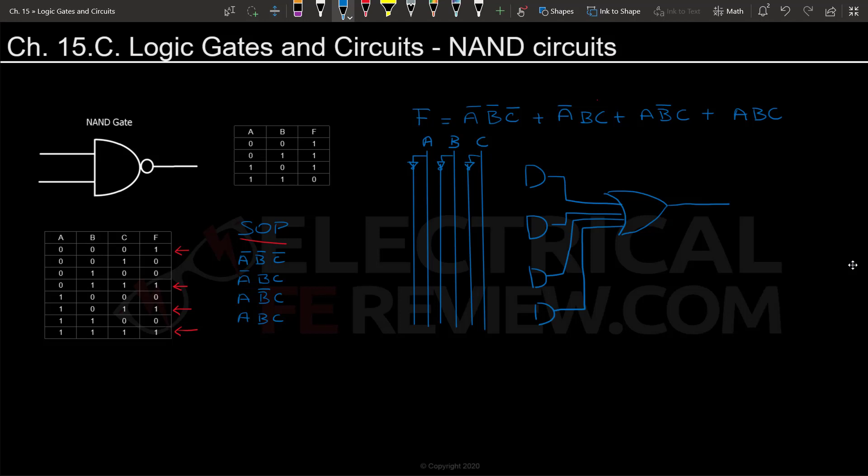Now we're going to start connecting the variables to their terms. We're going to connect A̅, B̅, and C̅ to the first term. We'll do a dot at A̅ and connect it to the AND, same with B̅ and C̅. Then I'll do the remaining terms. And this is our output F.